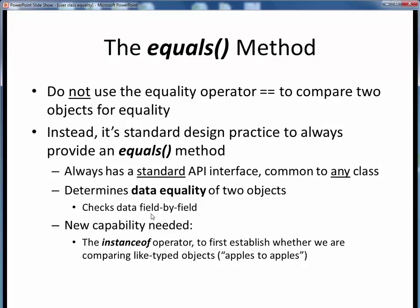If every instance variable of one object is equal to the corresponding instance variable of a second object, we say those two objects are truly equal, and equals will return a true result.